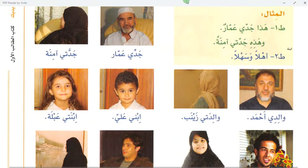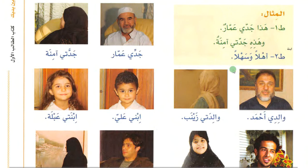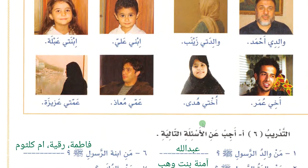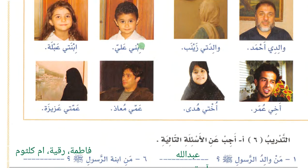Now introduce your family members. هذا جدي عمار — this is my grandfather Ammar. وهذه جدتي أمينة — and this is my grandmother Amina. Second person says: أهلاً وسهلاً — welcome. Then: هذا والدي أحمد، وهذه والدتي زينب. Then: هذا ابني علي، وهذه ابنتي عبلة. Each time the second person says: أهلاً وسهلاً. Practice this without looking at the example.